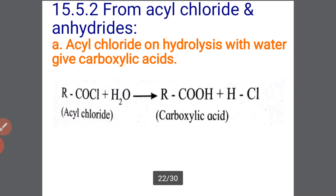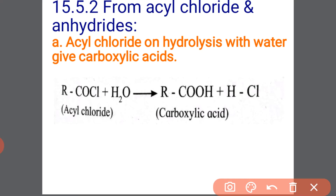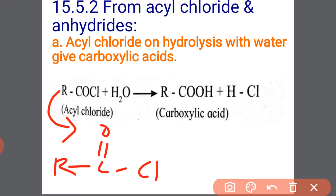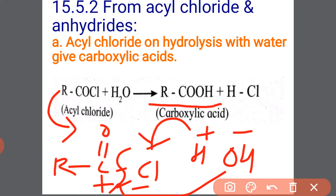Next, from acyl chloride and anhydrides. Acyl chloride on hydrolysis with water gives carboxylic acids. Acyl chloride means RCOCl — R, C double bond O, Cl. Water means H⁺ and OH⁻. Carbon is positively charged and chlorine is negatively charged. Similar to the first reaction, H⁺ will combine with the negatively charged chlorine, and OH⁻ will combine with the positively charged carbon. Because of formation of new bonds, the bond between carbon and chlorine will break, and the new product formed is carboxylic acid, RCOOH, with byproduct HCl.